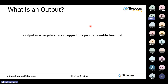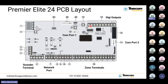So what is an output? An output is a negative trigger, fully programmable terminal. I would like to quickly show you where the outputs are available in the control panel. These outputs are basically negative trigger terminals and they give you minus 500 milliamps.